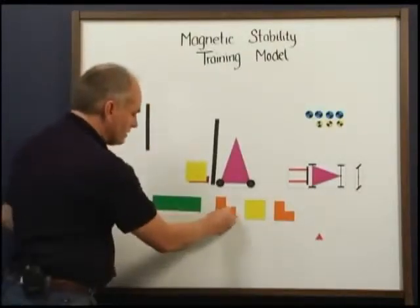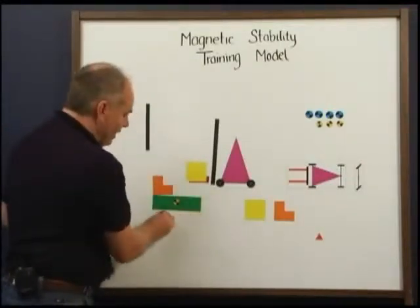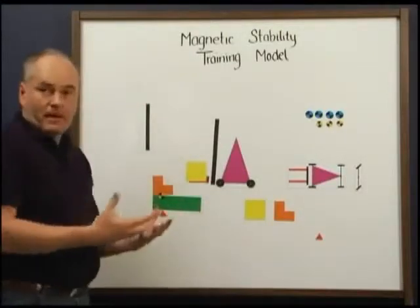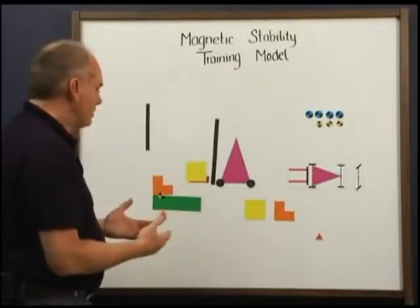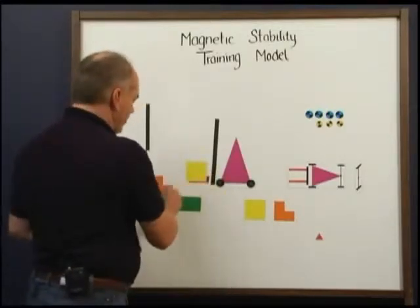The same with the green one - they can play with that. You can say, what if the load all of a sudden did that? You can always change the scenarios to make sure they understand the principle. Now what happens on the forklift? We have the